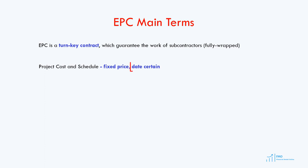The EPC contract is date certain, so the project must be built and ready for operation by a certain date. This is advantageous for the sponsor, especially when the sponsor incurs penalties for construction delays, which is typical in project finance transactions. For example, in power projects, the power off-taker will penalize the sponsor if the project is not ready to generate power by the date indicated in the power off-take agreement. Additionally, when the project borrows money from the lender, interest must be paid, so a project delay means more interest costs. Therefore, the construction contract must be date certain in project finance transactions.